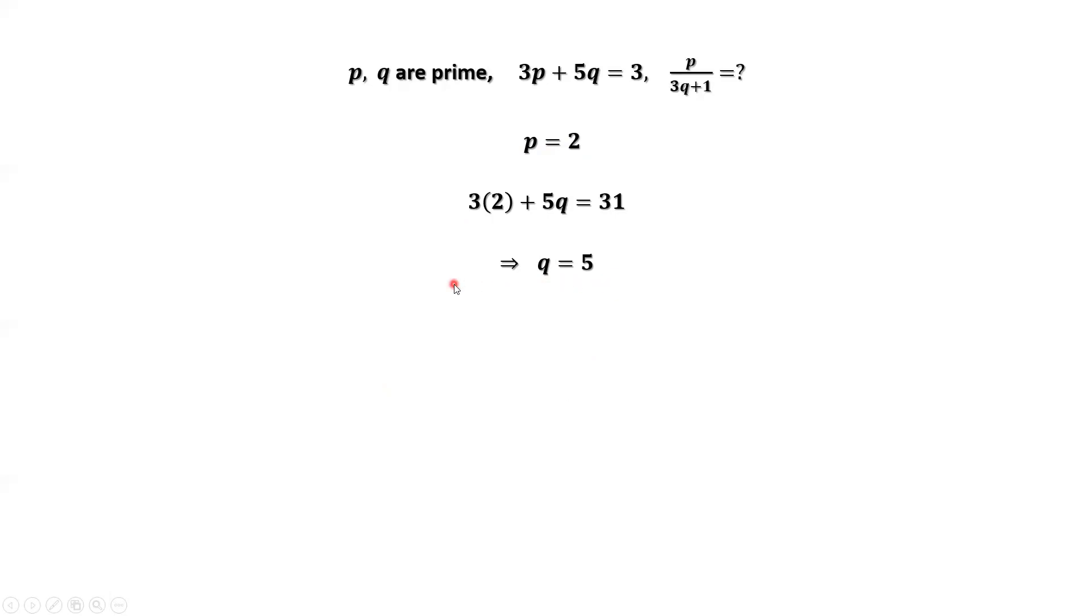We are ready to derive the final result for this case. P divided by 3Q plus 1. Replace P by 2, replace Q by 5. We have 1 over 8. 1 over 8 is the final answer for P over 3Q plus 1.